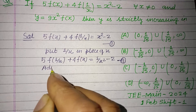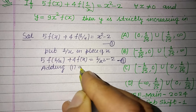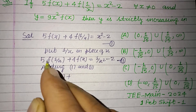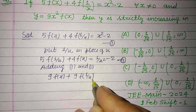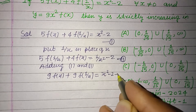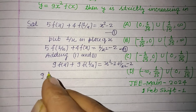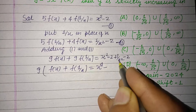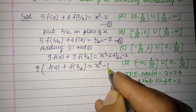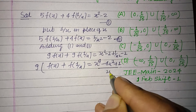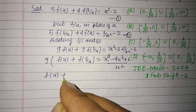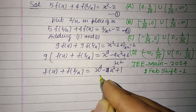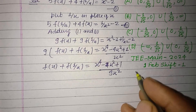Now adding the first and second equations, we get (5+4)f(x) + (5+4)f(1/x) = x² - 2 + 1/x² - 2, which is 9f(x) + 9f(1/x). Taking 9 as common, therefore f(x) + f(1/x) = (x⁴ - 4x² + 1) / x². This is our third equation.